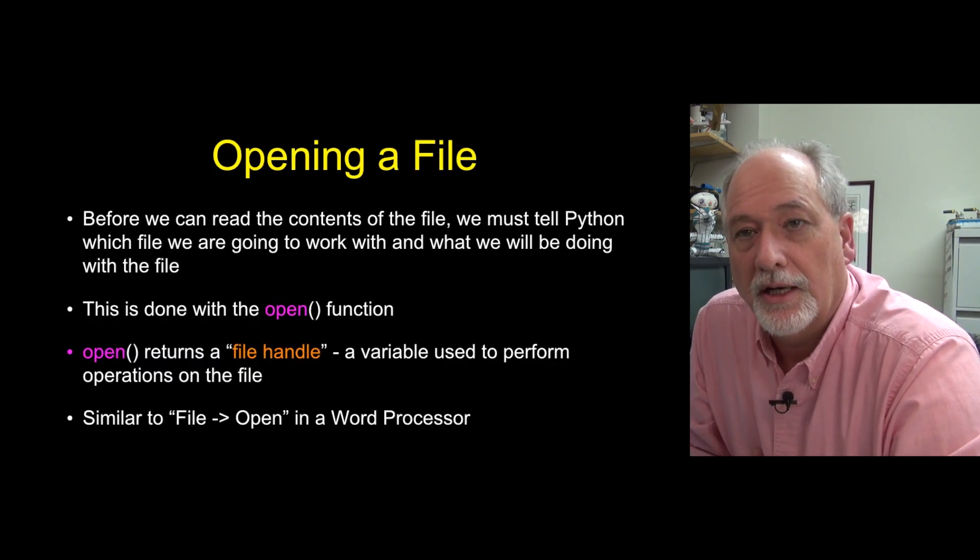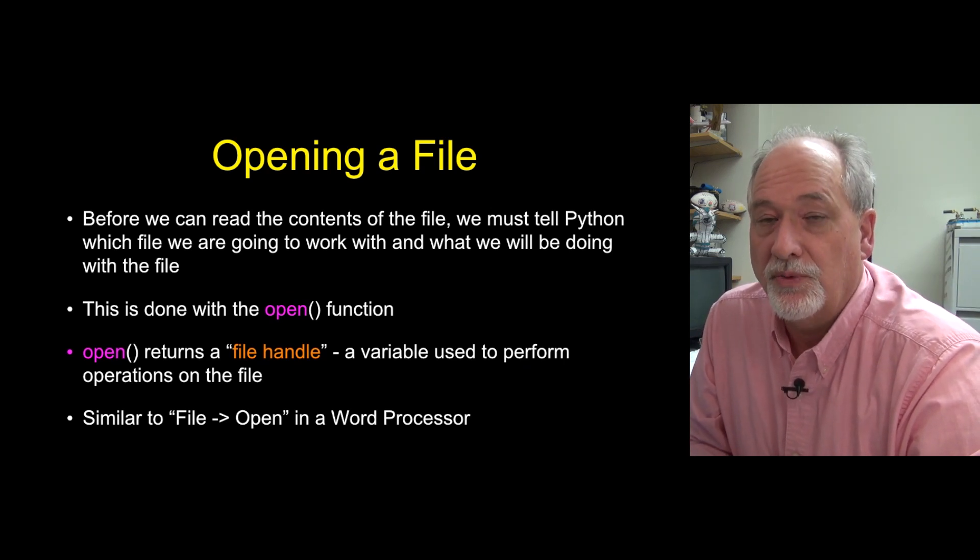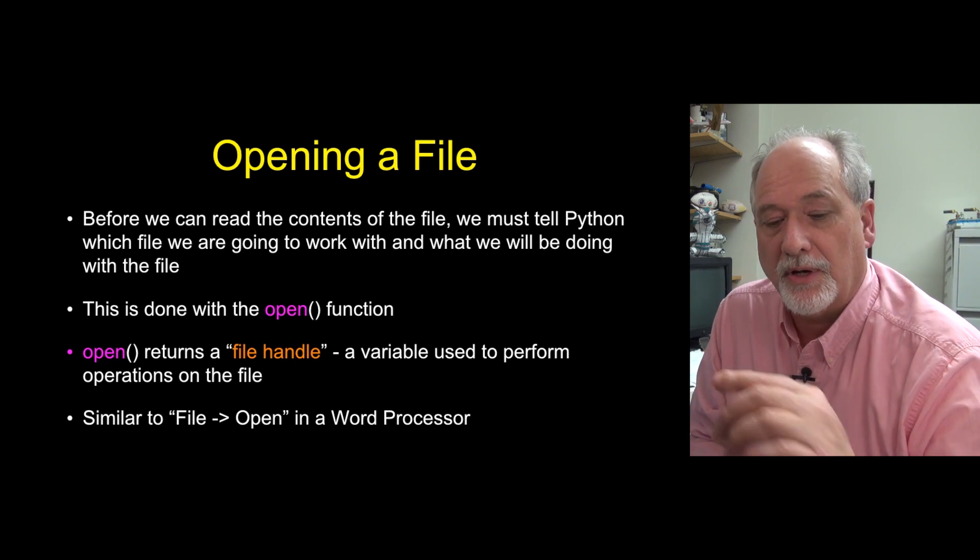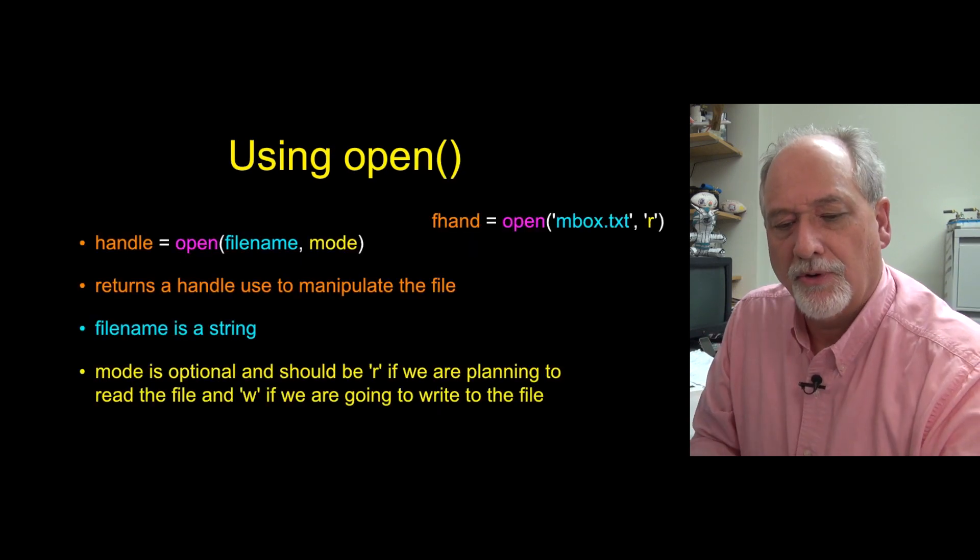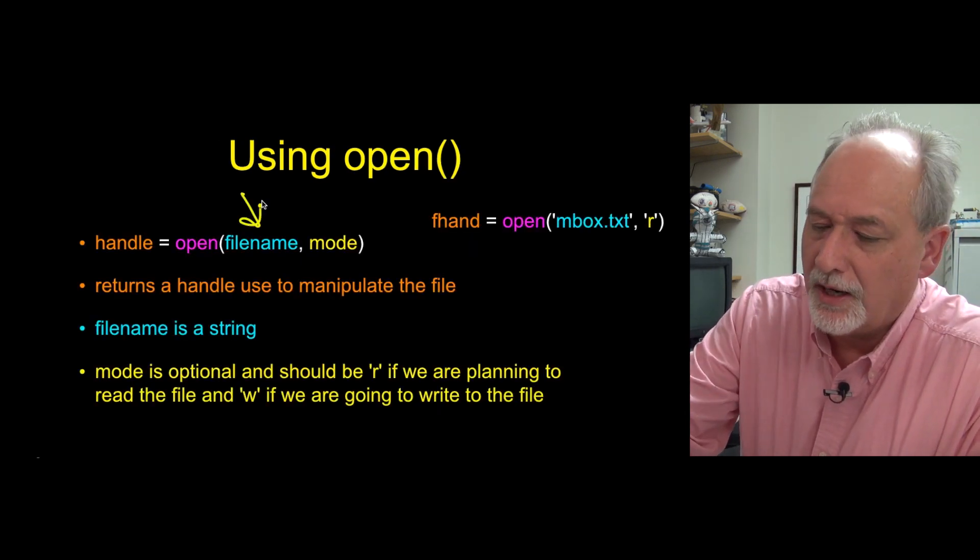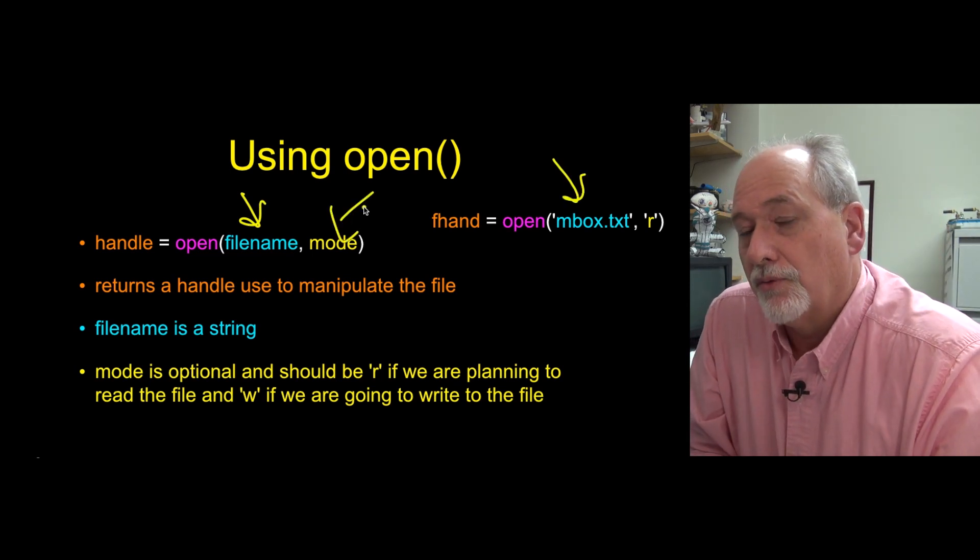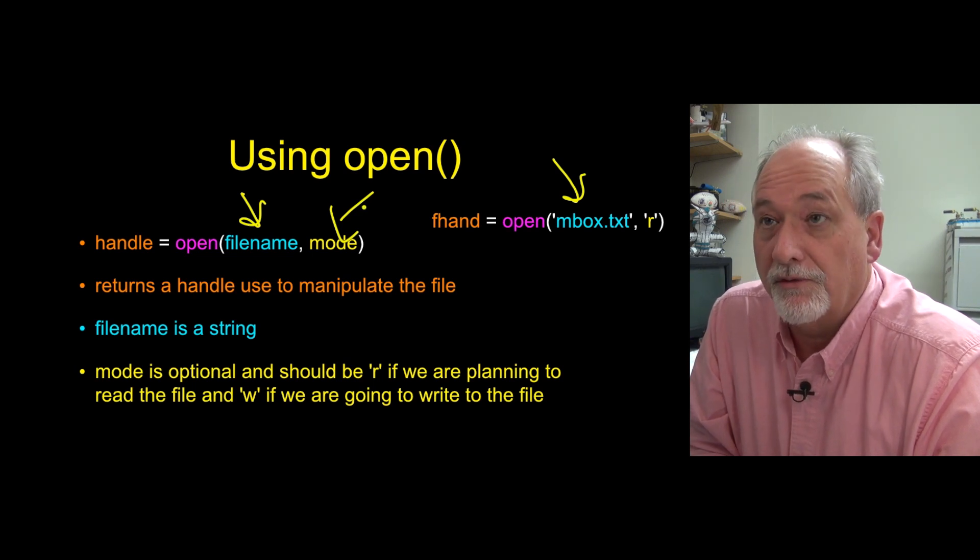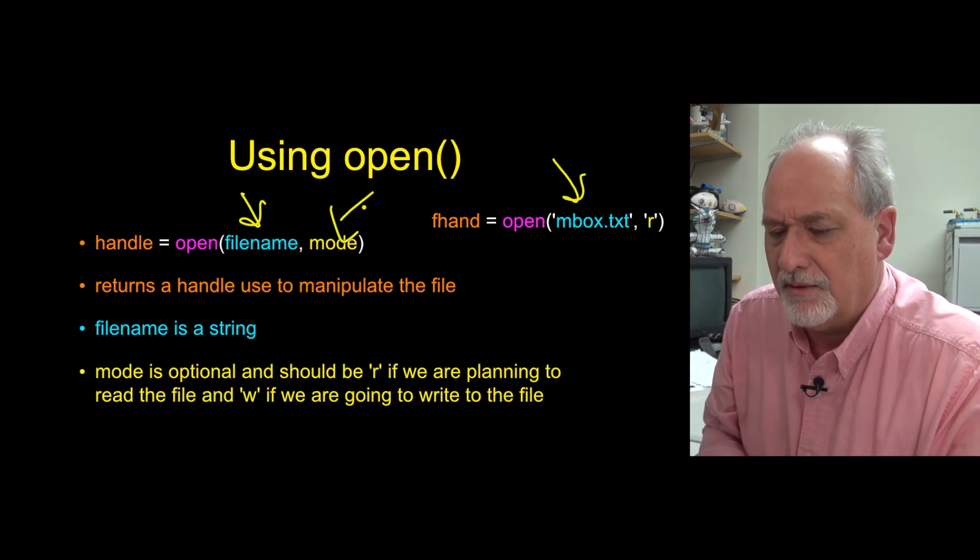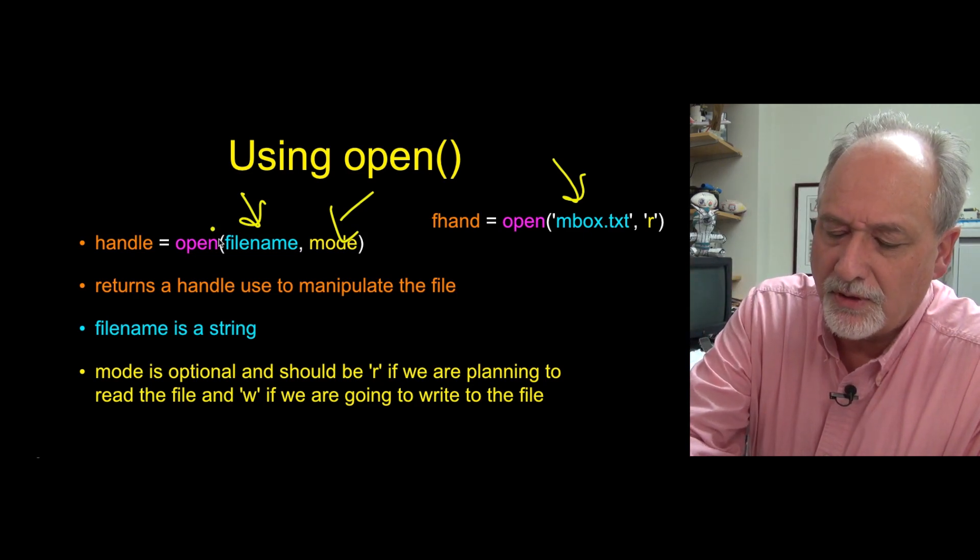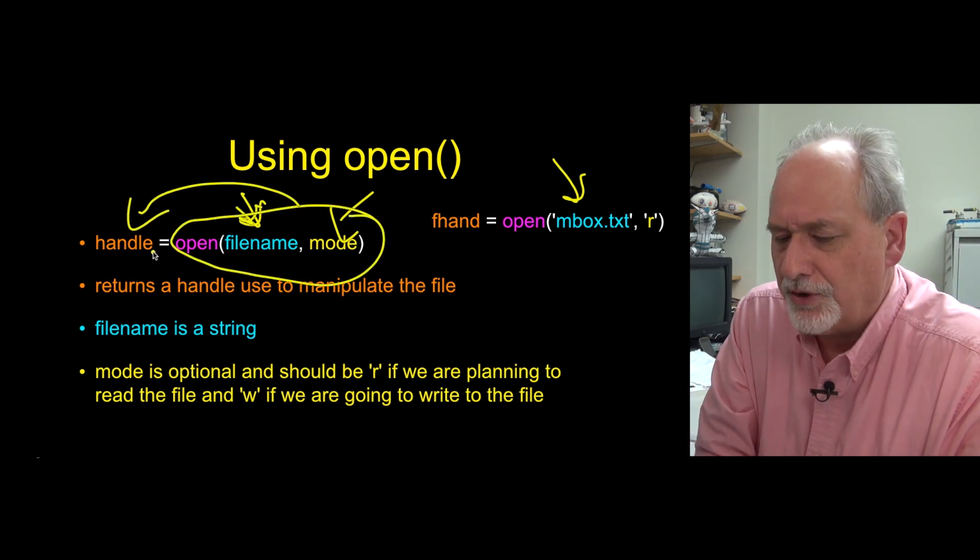So to read a file, you have to call the open function. And open returns what we call a file handle. Open doesn't actually read the file. Open makes it possible so that you can read the file. So the parameters to open are, it takes one parameter that's required, which is the name of the file. Another parameter that's optional, whether or not to read it or write it. If we're reading the file, it doesn't harm it. You can read it over and over. If you write it, it actually, if there's already data in that file, it truncates it and writes something. And we're not really gonna write files, we're mostly gonna read them. And so open sort of, you pass it in a file, it gives you back this file handle, and then you have a variable in which you store it.